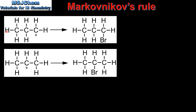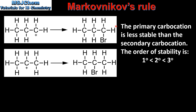Let's start by looking at the carbocation formed in each reaction. In the first reaction, which produces 1-bromopropane, we have a primary carbocation. In the second reaction, which produces 2-bromopropane, we have a secondary carbocation. The primary carbocation is less stable than the secondary carbocation.